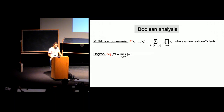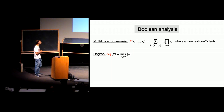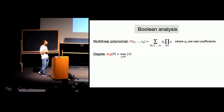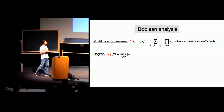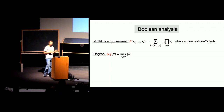Let me give some basic definitions about Boolean analysis. A multilinear polynomial takes n variables as input — same as in quantum query complexity. A polynomial is multilinear if in each monomial, each xi appears at most to degree one, with real coefficients. The degree of such a multilinear polynomial is the size of the largest set S for which the coefficient is non-zero, so the degree is at most n.